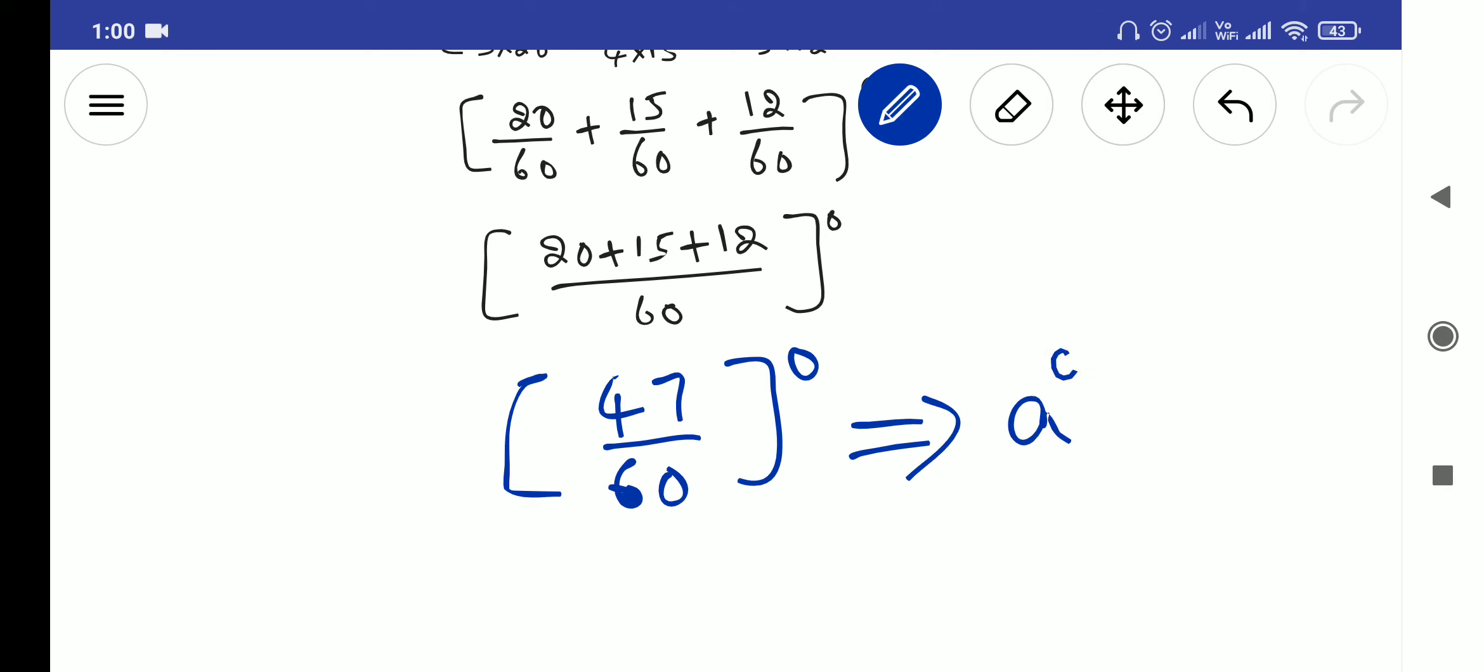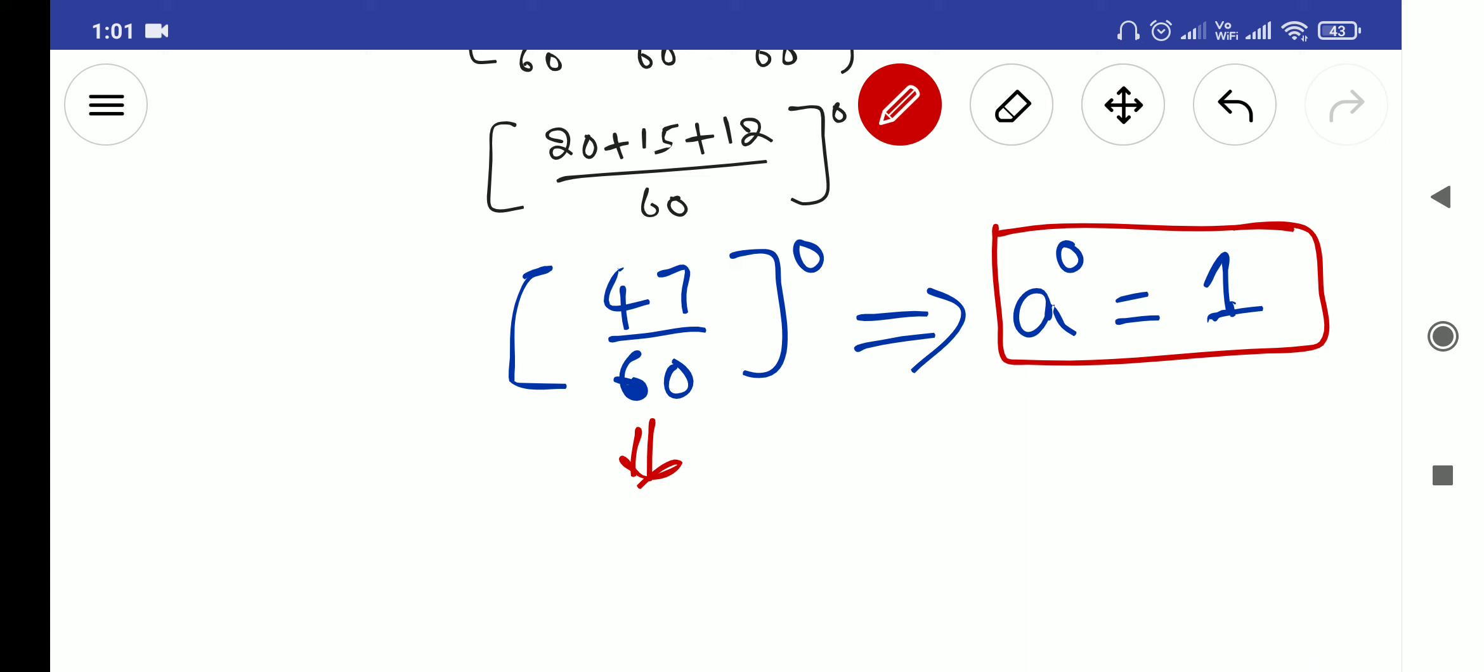But anything, a can be anything, base can be anything. If you see power 0, answer will be what? Yeah, one. So this finally, this is the reason why, like I was checking, if you don't find this answer also, answer you can tell it directly one only, if you don't find this final addition of fraction.